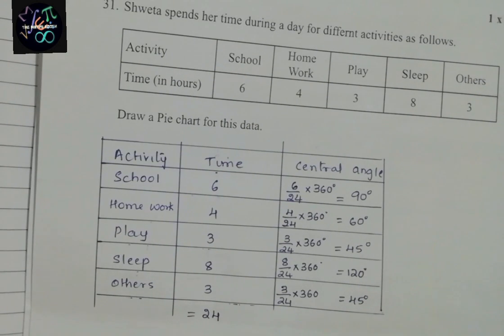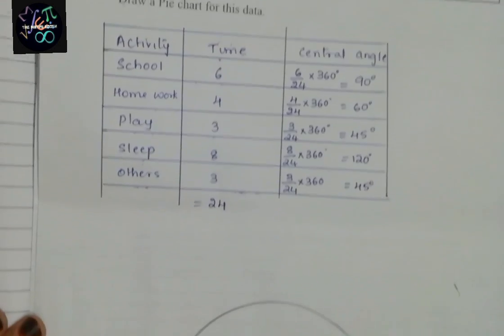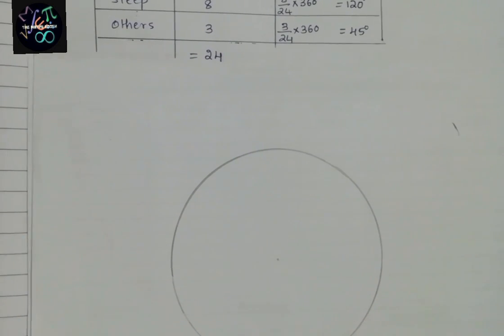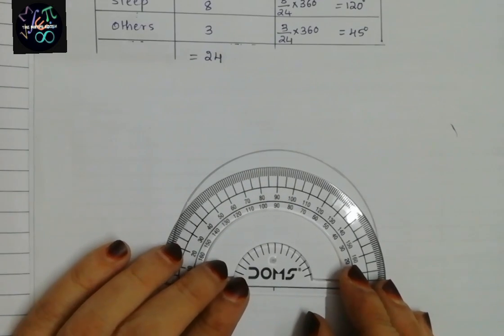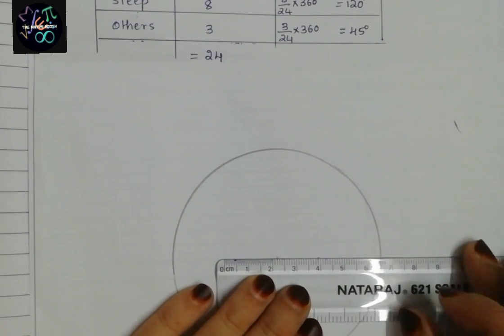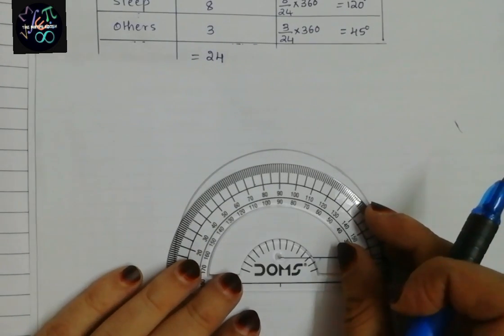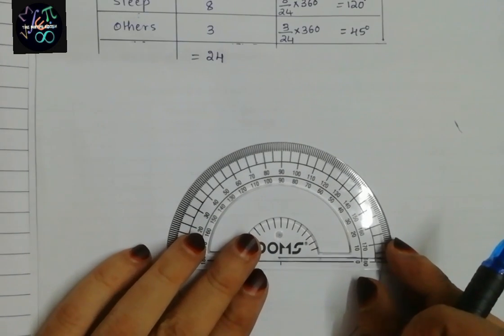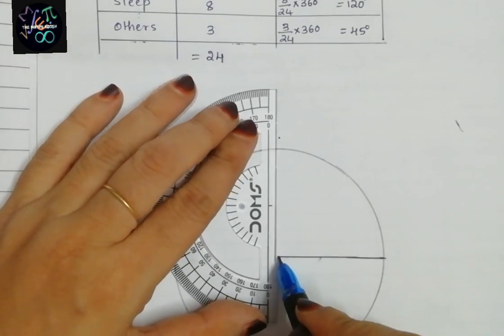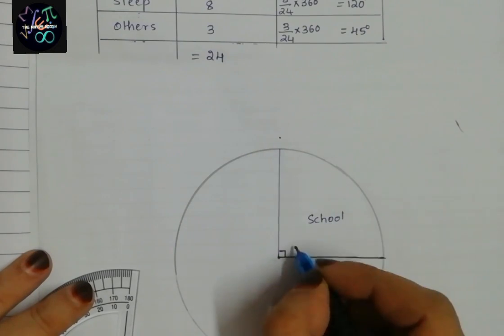Now we draw the pie chart using these central angles. I have drawn a circle. First I draw a radius line, then place the protractor exactly on the line and measure 90 degrees — that is the sector for School. School activity is 90 degrees.